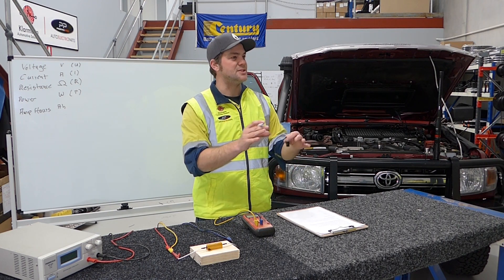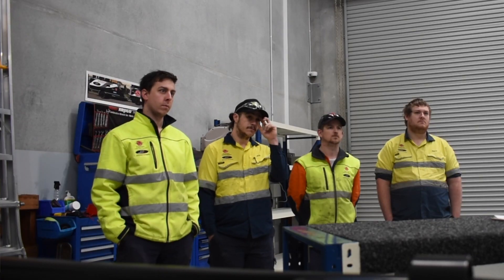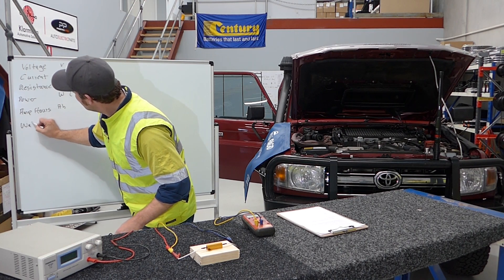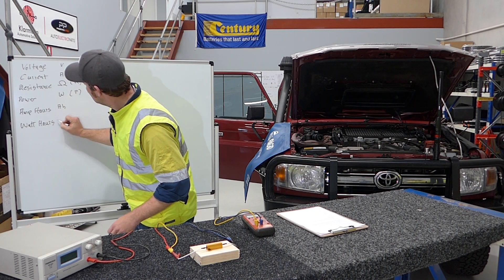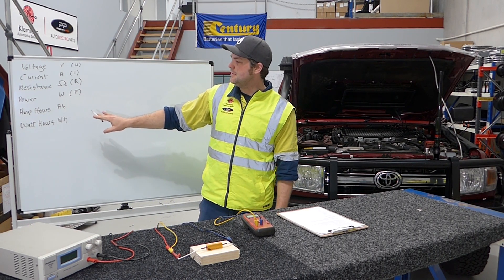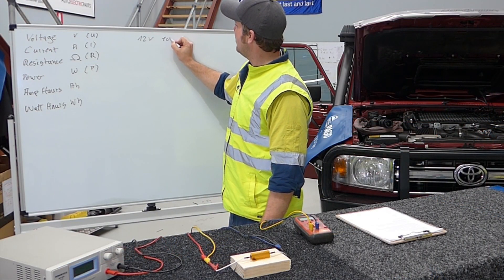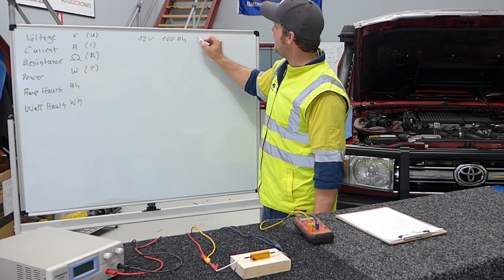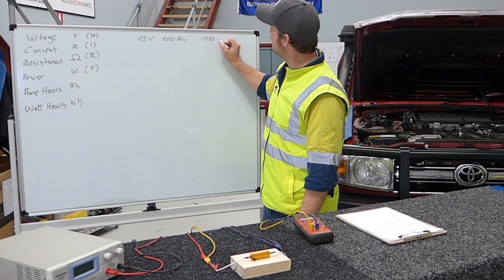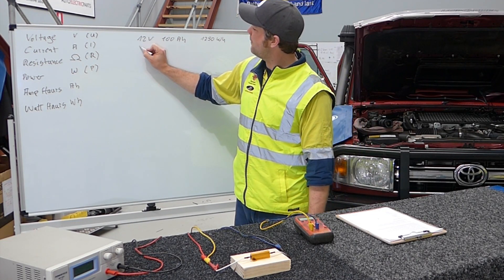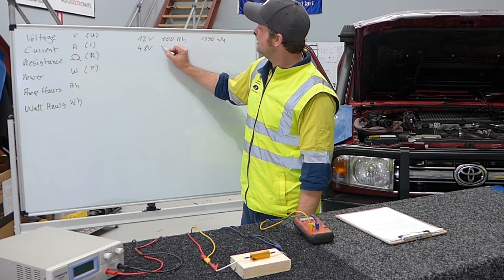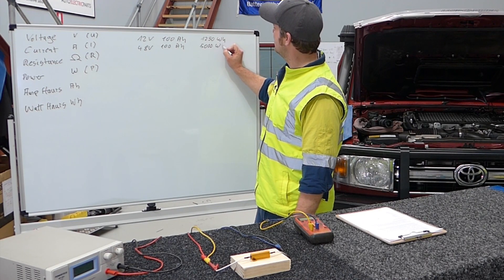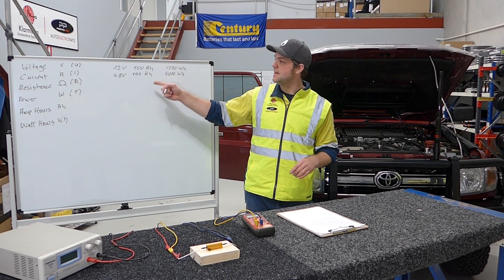The proper unit to measure the energy stored in a battery is watt hours, because that includes the voltage of the battery and at the same time includes how many amp hours are stored. That is watt hours, or WH. For example, if you have a 12 volt 100 amp hour battery that is about 1,250 watt hours. But if you have a 48 volt battery with 100 amp hours stored in it, that is about 5,000 watt hours of stored energy. So you can see the difference between amp hours and watt hours.